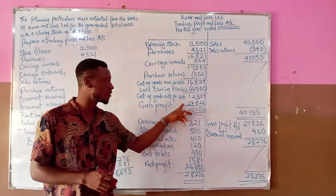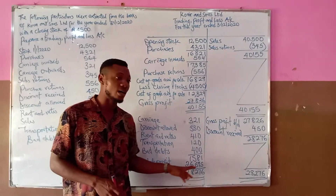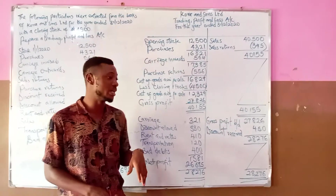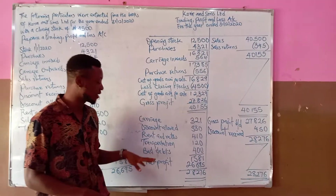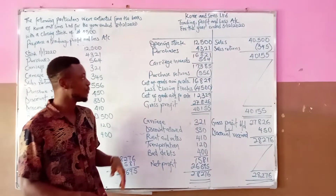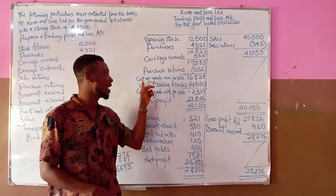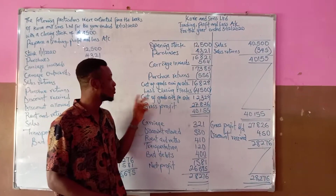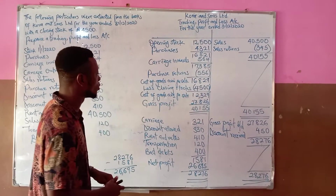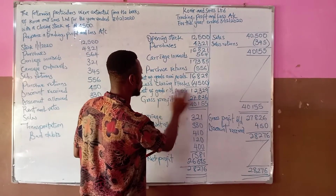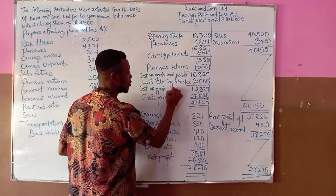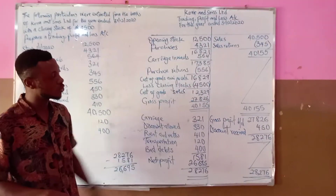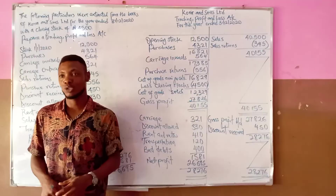In summary, Quora and Sons made a gross profit of 27,826 and a net profit of 26,695. The purpose of the trading account is to ascertain gross profit or gross loss, while the profit and loss account ascertains net profit or net loss. The cost of goods sold figure is 12,329. Thank you for the class.